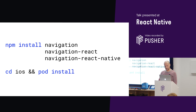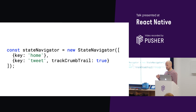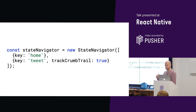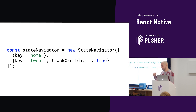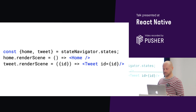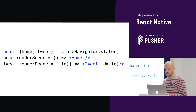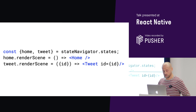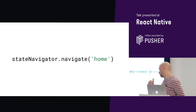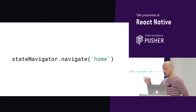To set up our app to use the Navigation Router, we first create a state navigator. This is where we define our states — one state for each scene in our app. So we have a home state for the home scene and a tweet state for the tweet scene. The next step is to map each state to the component that renders the associated scene. We assign a render scene function to the home state that returns the home component, and a render scene function to the tweet state that returns the tweet component. Then we do an initial navigation to the home state by calling the navigate function on the state navigator, so that when our app first starts, the home scene is displayed first.